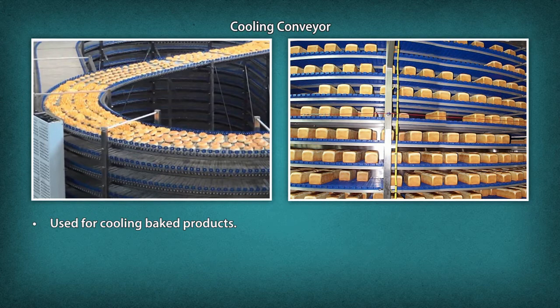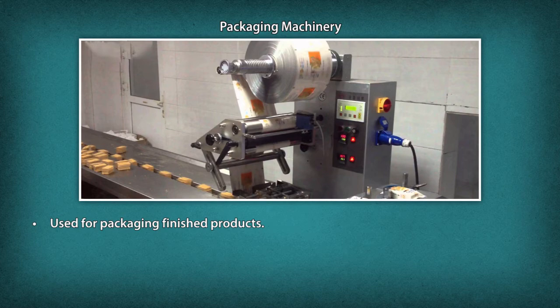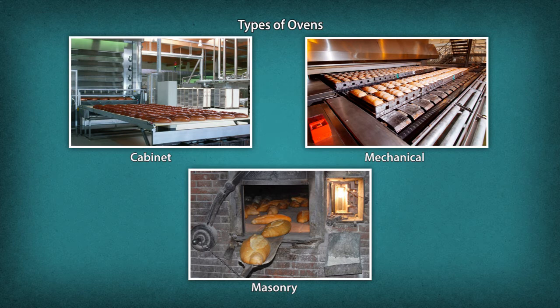Types of Ovens. Ovens are the most important equipment required in the baking process. Different types of baking products require different baking processes; hence, different types of ovens are used. Cabinet type: Rack ovens and deck convection ovens — large sheet pans can be wheeled for baking in various heights.